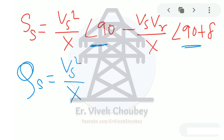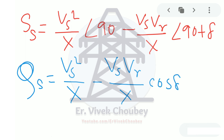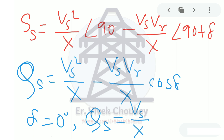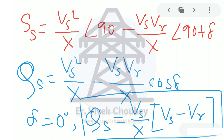Qs equals Vs²/X times sin(90°), which is 1, minus Vs·Vr/X times sin(90° + δ), which equals cos δ. For simplicity, taking δ equal to 0 — meaning the sending end and receiving end voltages are in phase — we have Qs equal to (Vs/X)(Vs − Vr).